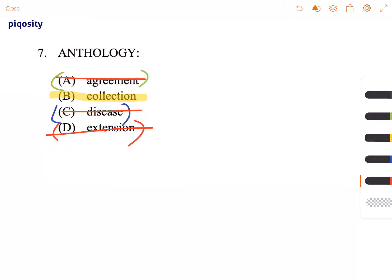If you break down anthology, you have anth and ology. The suffix ology means a variety of things.